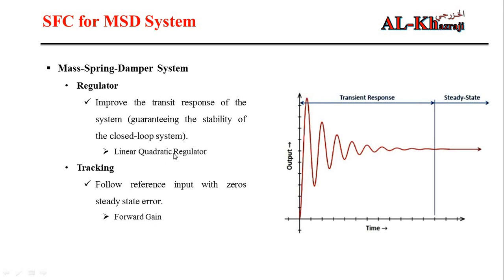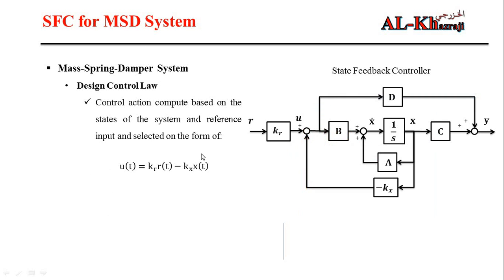That is why we apply a forward gain to make the system track the reference input. We use a combination of the linear quadratic regulator with a forward gain to improve performance. The control law is u = KR·r − KX·x, where KR is the forward gain, KX is the feedback gain, r is the reference input, and x is the state. A link in the description covers the state feedback controller design in detail.